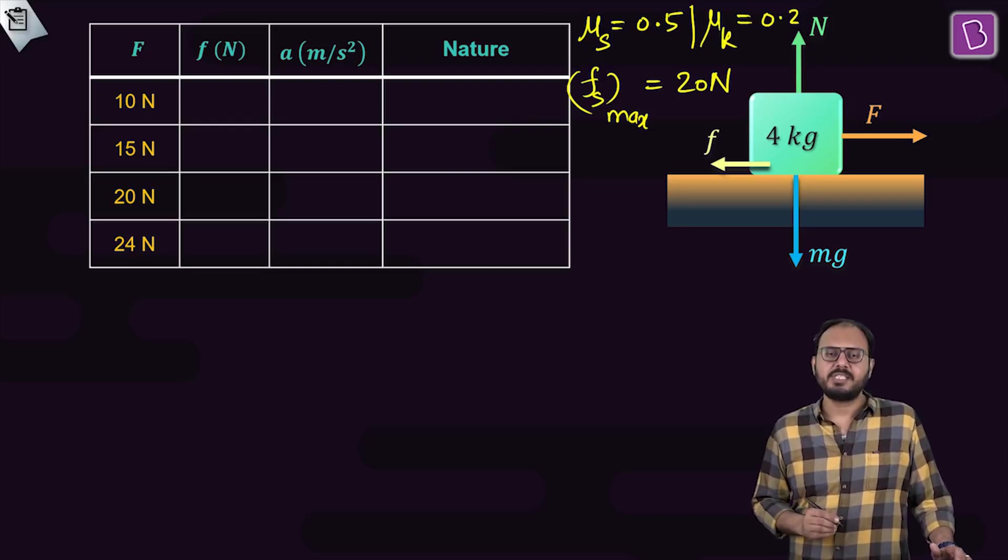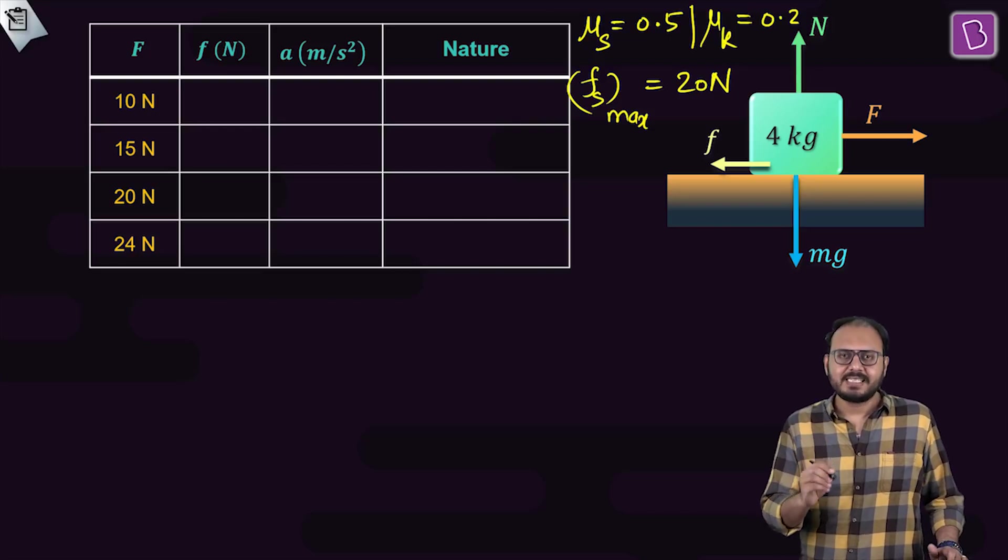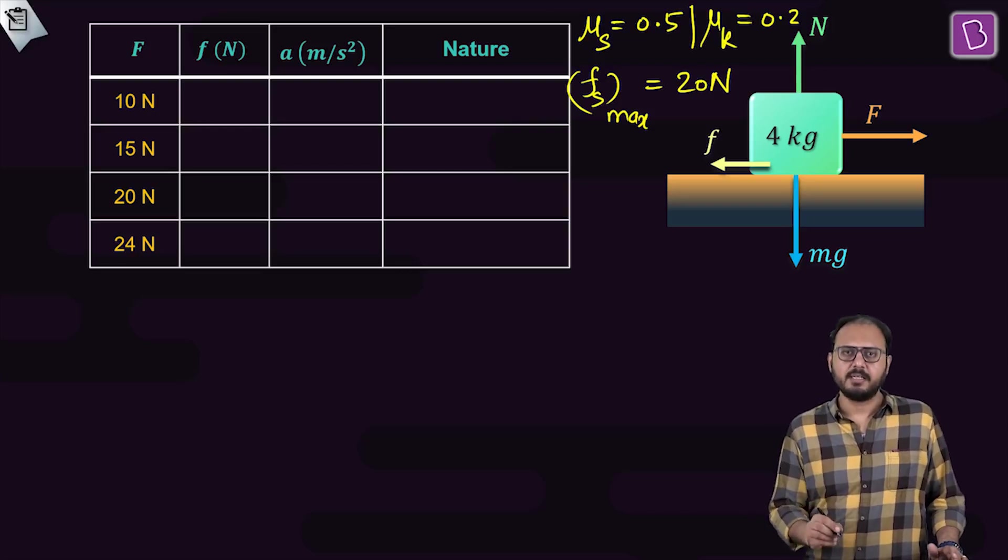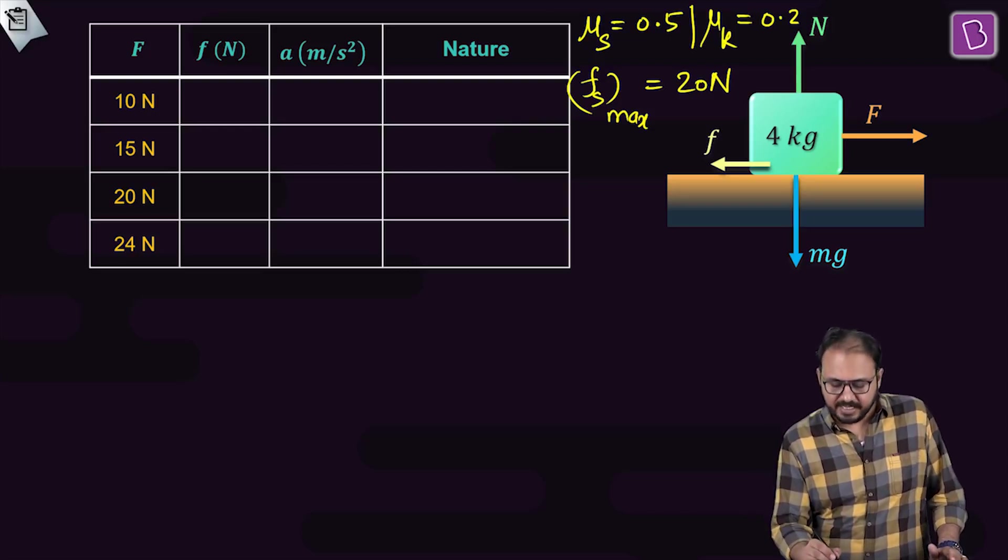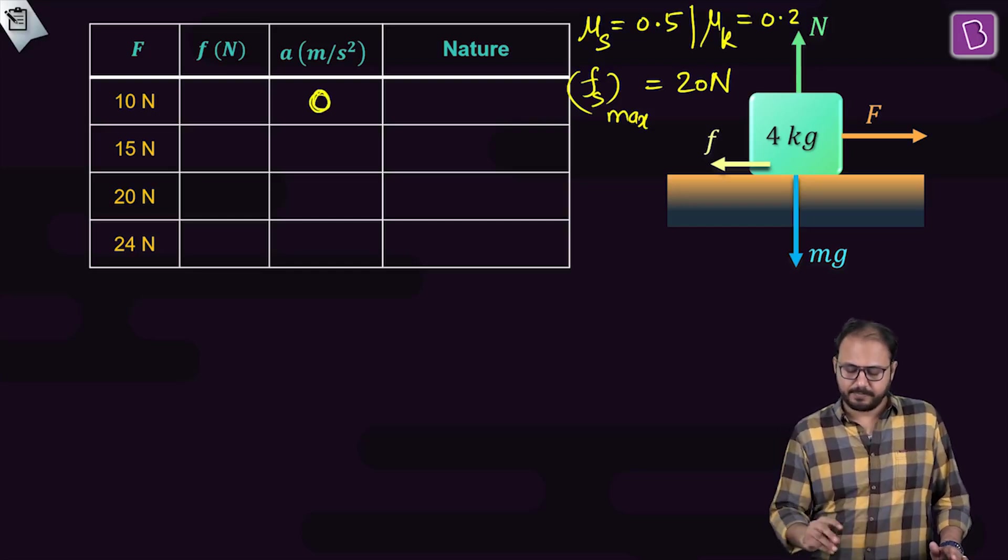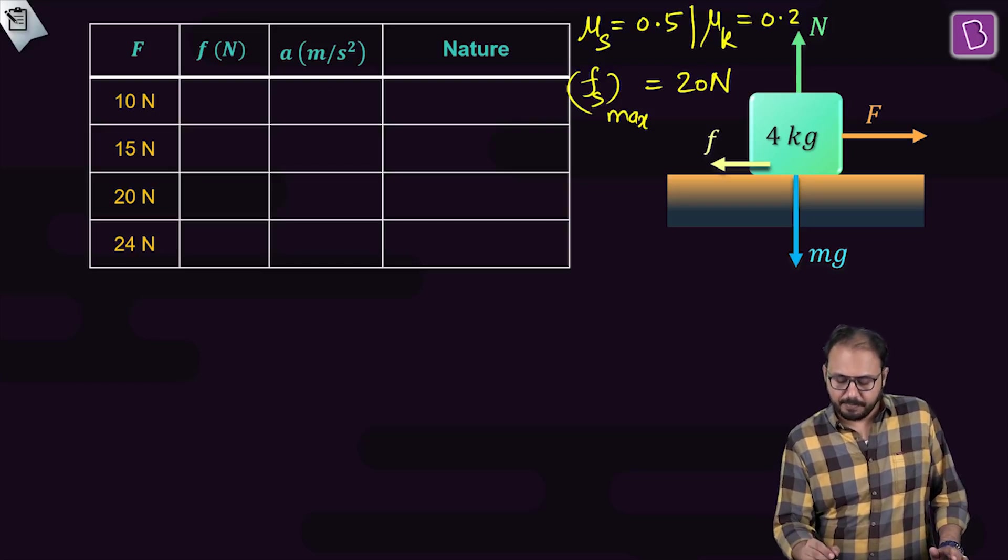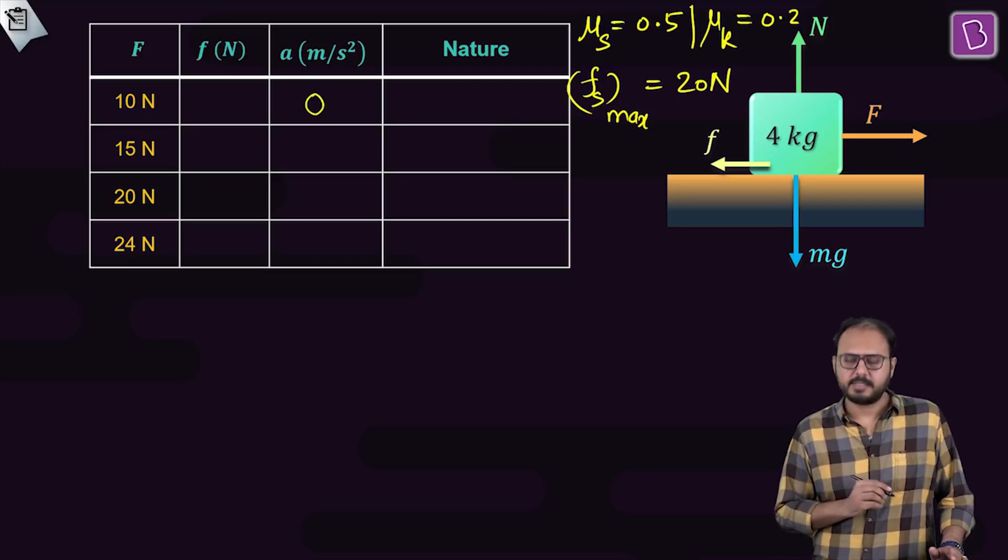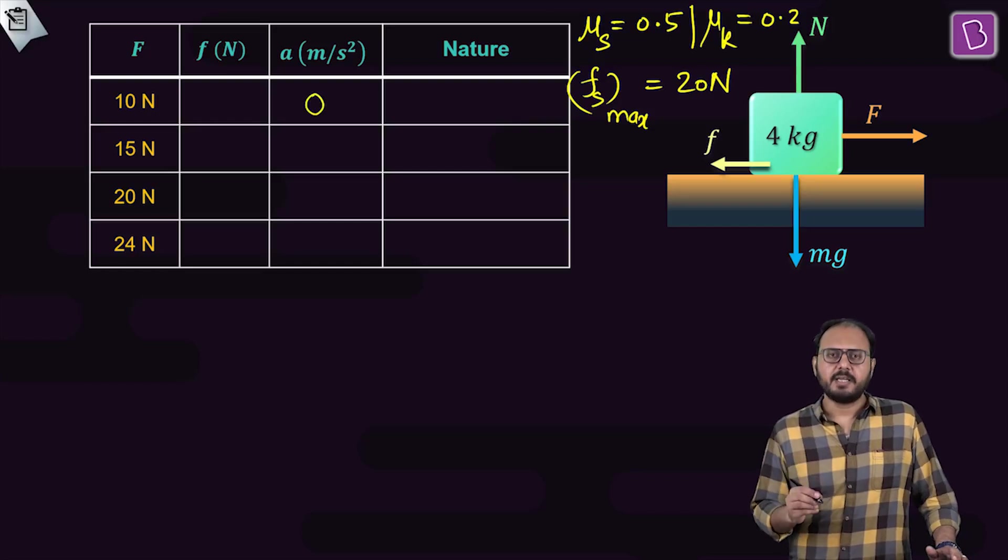Question number 1. When the external force is 10 newton, is it less than fs max? Yes. That means the first thing I know is that there will be no acceleration. Why is that? Because the particle will remain at rest.